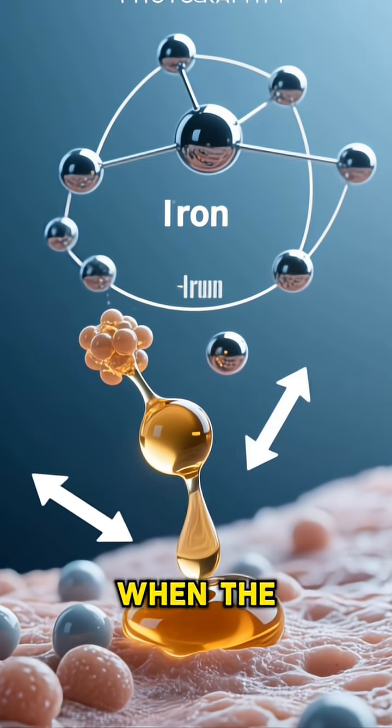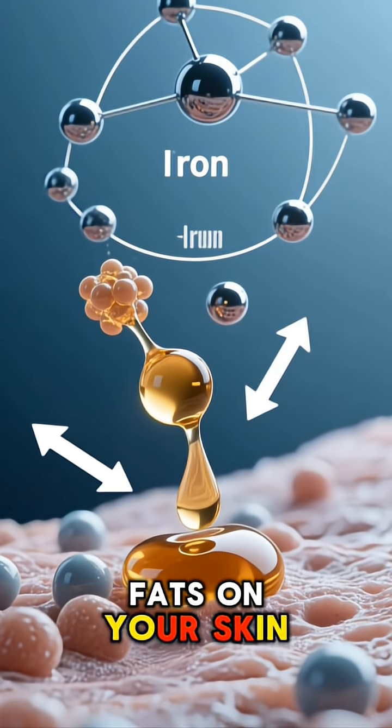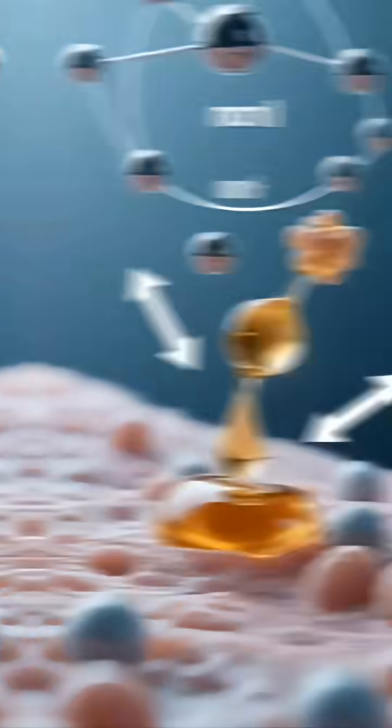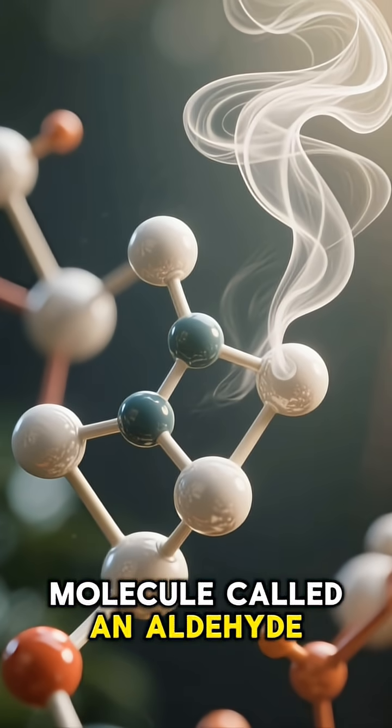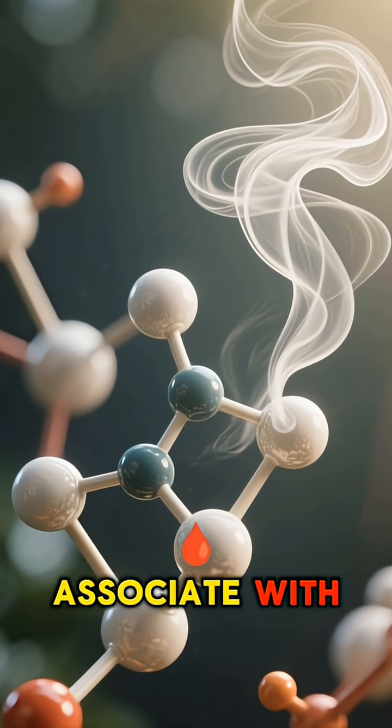Here's the science. When the iron in your blood comes into contact with the oils and fats on your skin, it creates a brand new compound. This compound releases a specific type of molecule called an aldehyde, and that's what gives off that distinct metallic odor we all associate with blood.